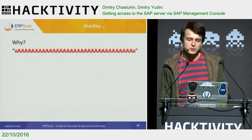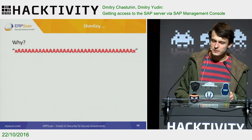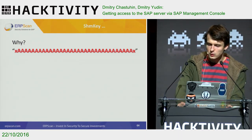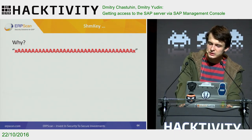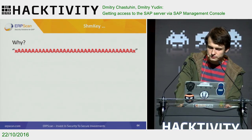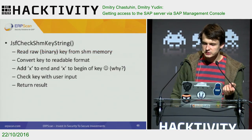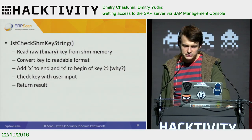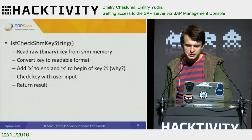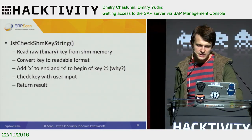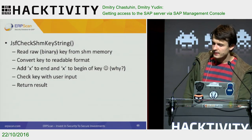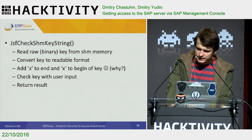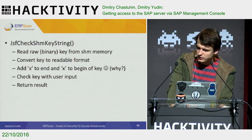So, we have a way to execute commands at the operating system level of SAP, we have a username, and probably we have a password for this hardcoded username. Our next goal is to understand why the key is XAAX. To do that, we need to understand more deeply how the function JSF_check_shmk_string works. This function reads a binary key from shared memory, and after some modification, converts this key to a readable string format. After that, it adds the character X at the beginning and end of the key. Then it checks the key against the user input.